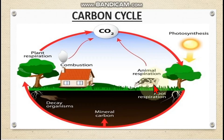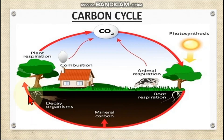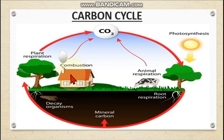When animals feed on green plants, the carbon compounds of the plant become part of the animal body. Similarly, carbon in plants is also preserved in fossil fuels such as coal, natural gas, and oil. Carbon dioxide is added to the atmosphere when living organisms respire — both animals and plants release carbon dioxide. When fossil fuels like natural gas or coal are burnt, the carbon compounds already present in them are also released into the environment as carbon dioxide.